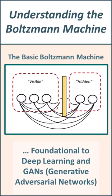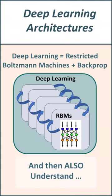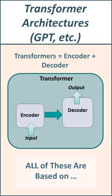If you can understand the Boltzmann machine, then you automatically have a very strong basis for understanding deep learning architectures and also GANs, generative adversarial networks, and you even have a bit of a basis for understanding transformers.